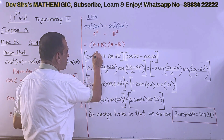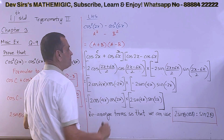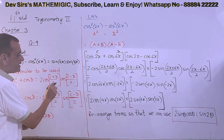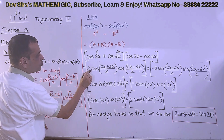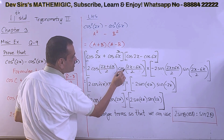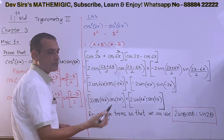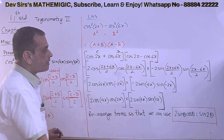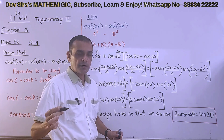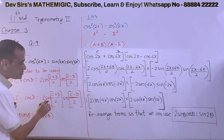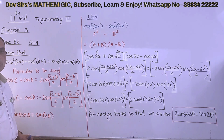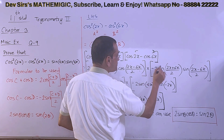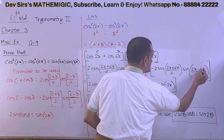Now applying cos C plus cos D: the formula is 2 cos (C plus D)/2 · cos (C minus D)/2. So we get 2 cos (2x plus 6x)/2 · cos (2x minus 6x)/2. For cos C minus cos D, the formula is minus 2 sin (C plus D)/2 · sin (C minus D)/2. So we get minus 2 sin (2x plus 6x)/2 · sin (2x minus 6x)/2.